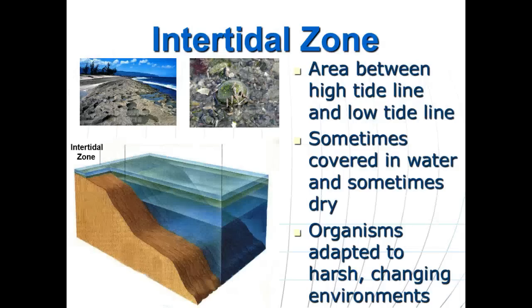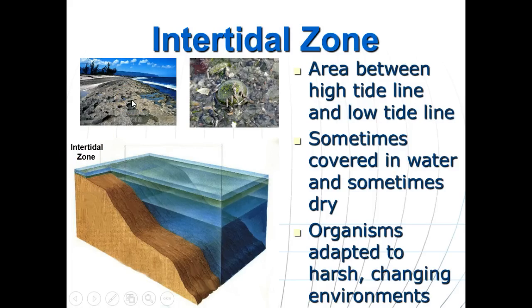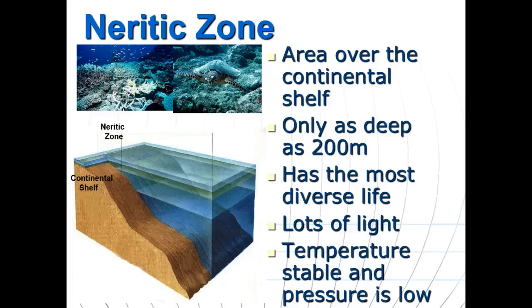The intertidal zone is the area between the high tide line and the low tide line. Sometimes this area is underwater and sometimes it's dry. Organisms here are adapted to an environment where water washes in and out — they have to cling to the bottom as water rushes in and out, and deal with periods of having no water, such as in small tide pools.